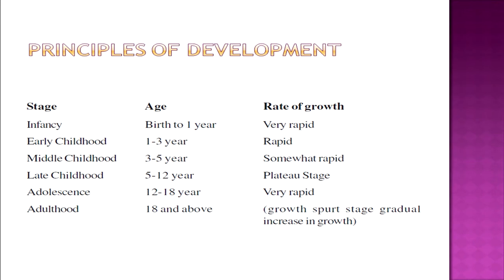From the growth chart, it is clear that infancy, early childhood, and adolescence are the three stages of maximum growth. In infancy and early childhood, there is considerable psychomotor development, language acquisition, and improvement in cognitive skills. During adolescence, there are rapid body changes, the sex drive begins to operate, cognitive and social skills improve, and there is a gradual increase in all human capacities. We can notice these changes if we observe little children, adolescents, and adults in our surroundings.